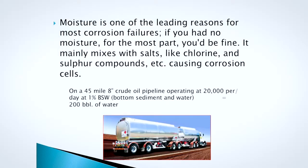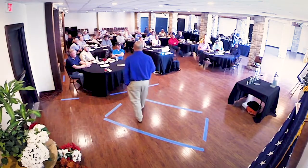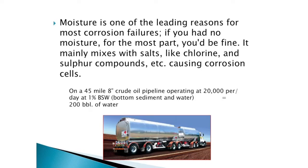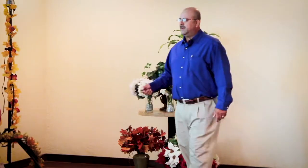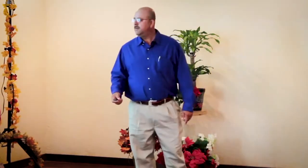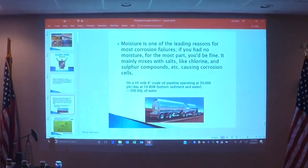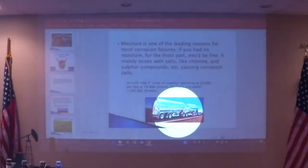Talking about moisture — moisture is one of the leading reasons for most corrosion failures. It mainly combines with salts and chlorides, creating corrosion cells. Here's an example: these tanker trucks are what I'm depicting as bad oil. Bad oil means these tankers have water mixed with oil. On a 45-mile gathering screw line operating at 20,000 barrels per day at 1% BSNW — bottom sediment water — you can literally be introducing 200 barrels of water into your pipeline system.